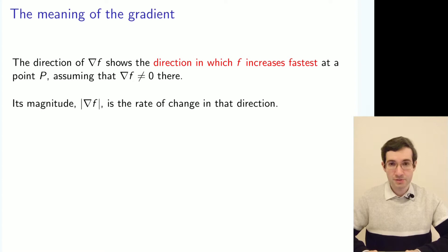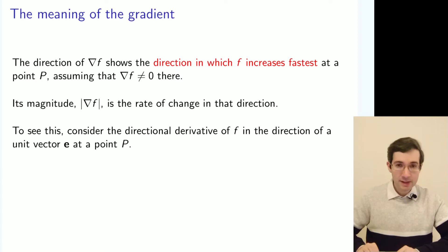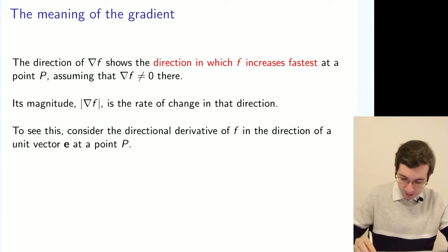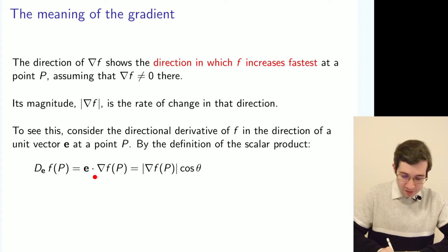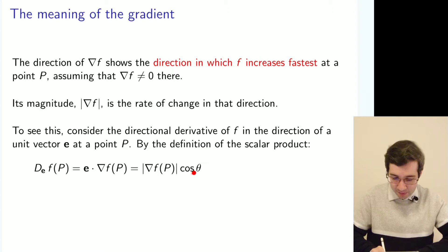And its magnitude shows the rate of change in that direction. To see this more directly, consider the directional derivative of that scalar field in the direction of a unit vector. By the definition of the directional derivative and the scalar product, we can write that the directional derivative in the direction of unit vector e is the magnitude of the gradient times cosine theta.